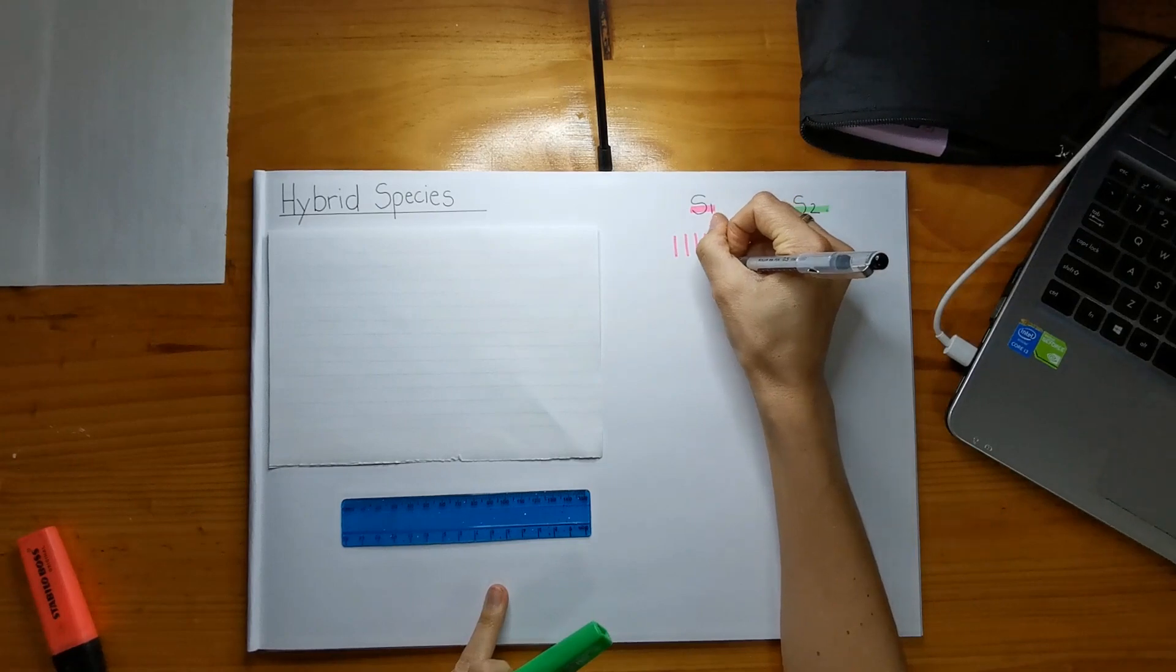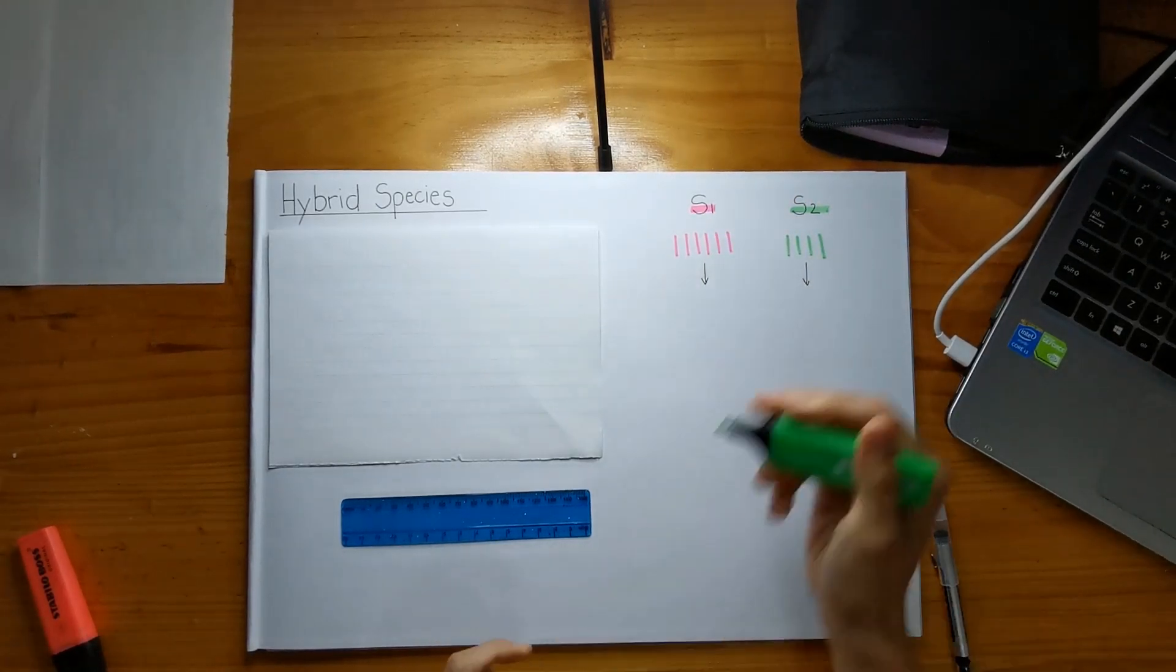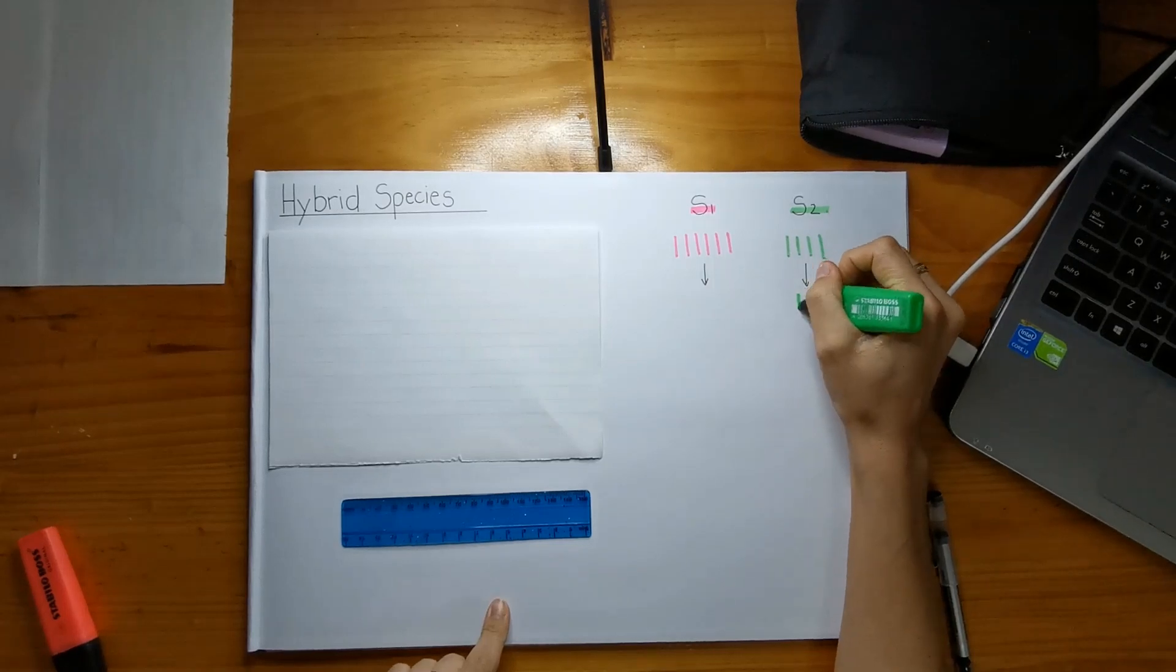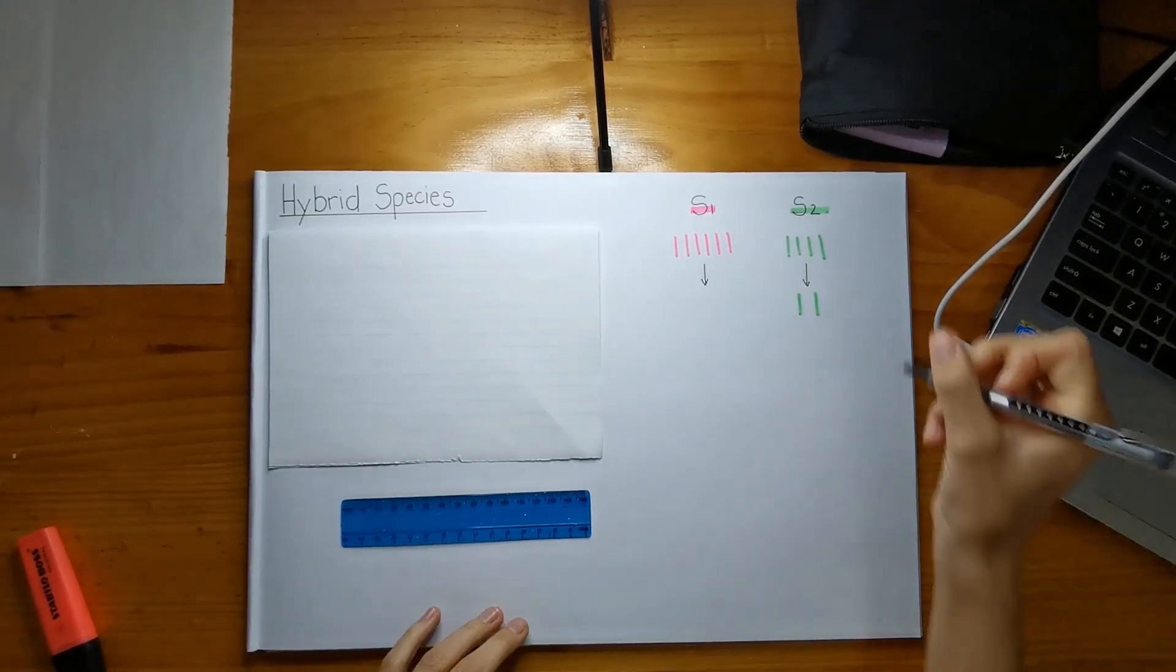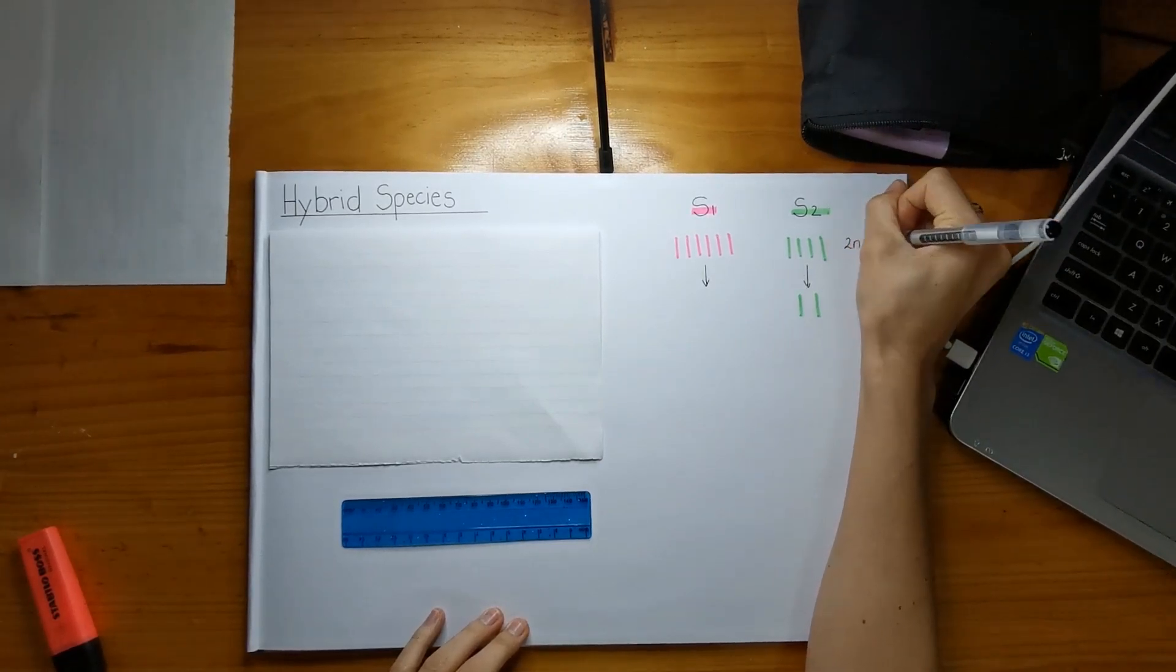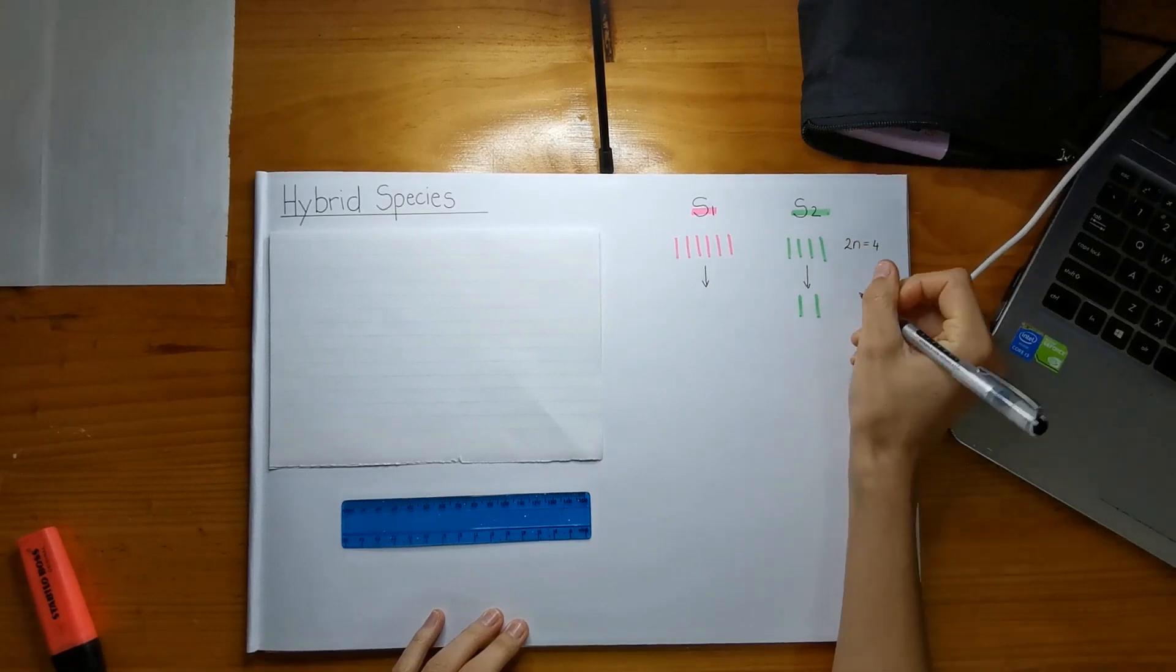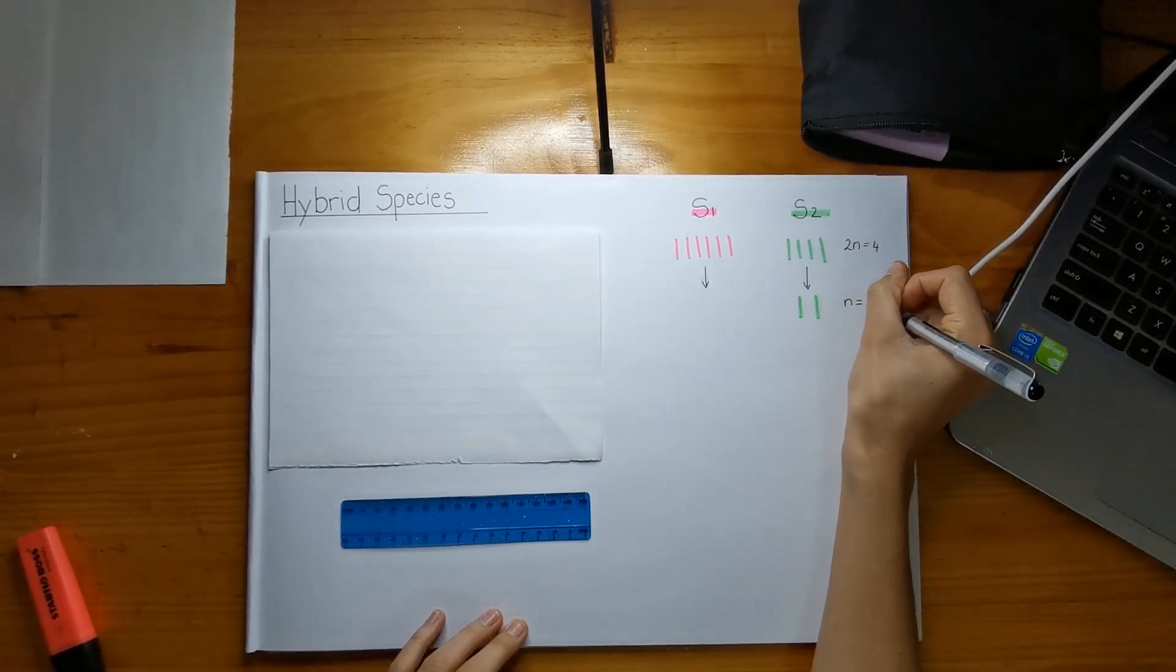So when they undergo meiosis, they're going to form their gametes. And from this species 2, there's obviously going to be half the number of chromosomes, because it was initially, its 2n was equal to 4, but now is in its haploid form, and it has 2.